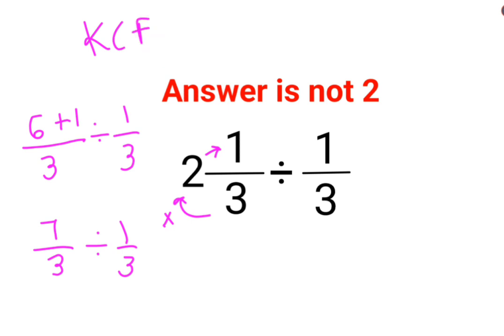...follow the rule of KCF, where K stands for keeping the first number as it is, C stands for changing the division sign to multiplication, and F stands for flipping or taking the reciprocal of 1/3, which is 3/1. So this is cancelling, and the answer for this question is 7.